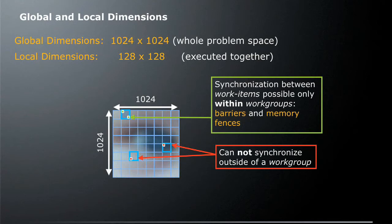It's key to note that two work items within a workgroup can synchronize, and they can synchronize using things such as barriers and memory fences. But if we have work items in two different workgroups, we can't synchronize those two together because they're not in the same workgroup.